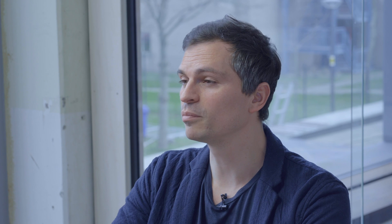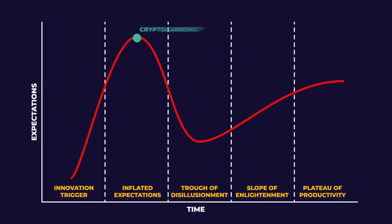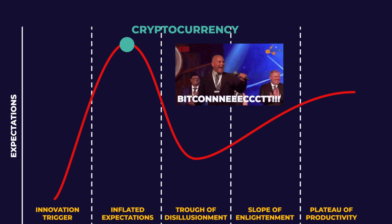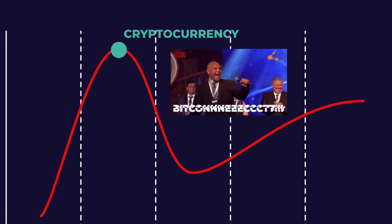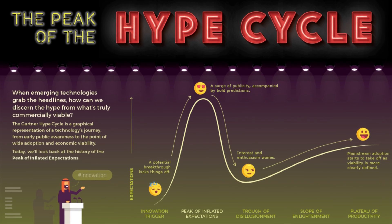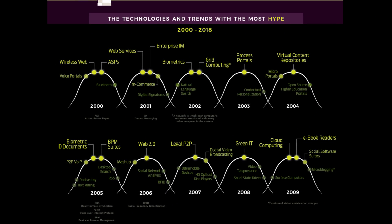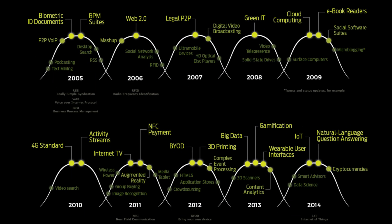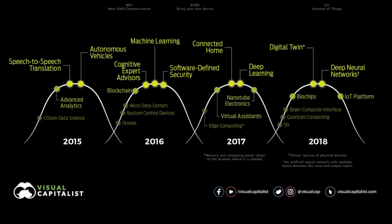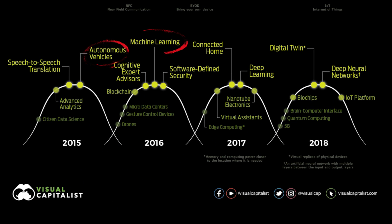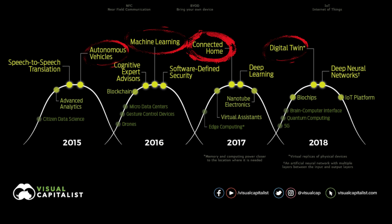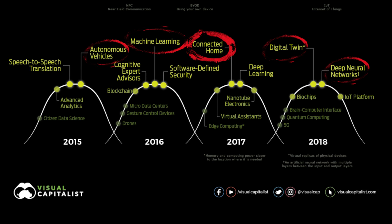Some examples you can remember: the AI winter, or what happened around cryptocurrency back in 2017. It's a great tool to get an idea of where a product or technology stands with regards to hype. Check out this beautiful infographic by Visual Capitalist that attempts to map the biggest hypes for each year — do you remember the hype around autonomous vehicles, machine learning, the connected home, or digital twins and deep neural networks?